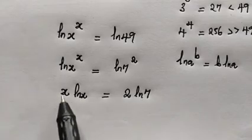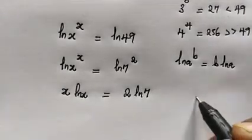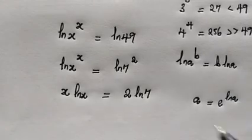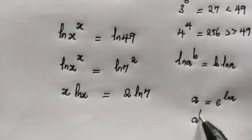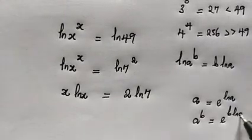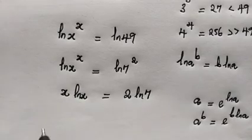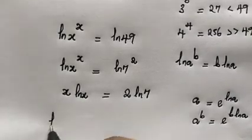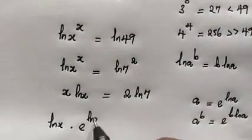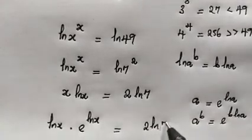From here, we rewrite x using the property that a = e^(ln a). Since x has power 1, x = e^(ln x). Substituting, the left-hand side becomes ln(x) multiplied by e raised to the power of ln(x), giving us ln(x)·e^(ln x) = 2·ln(7).